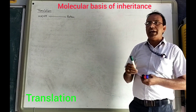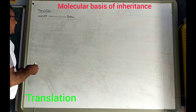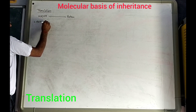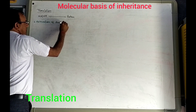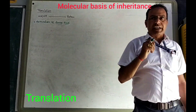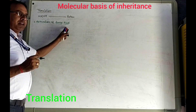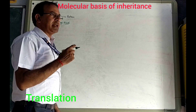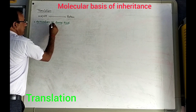Before the translation process, we need to know what steps will be applied so that translation can be completed. The first step during the translation process is the activation of amino acids. As we know, the amino acid present in the cell is inactivated. But before converting this amino acid into protein via mRNA, we need to activate it.